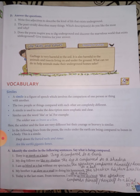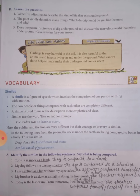Now we start vocabulary. What is a simile? A simile is a figure of speech in which there is a comparison between a person or thing and another completely different person or thing. A simile is used to make the description more emphatic and clear. Similes use the words 'like' or 'as.'